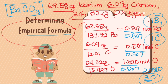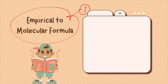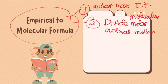Now let's look at converting from empirical to molecular formula. The first step is to calculate the molar mass of the empirical formula, using the periodic table values. The second step is to divide the actual molecular mass of the compound by the mass of the empirical formula to find the ratio.